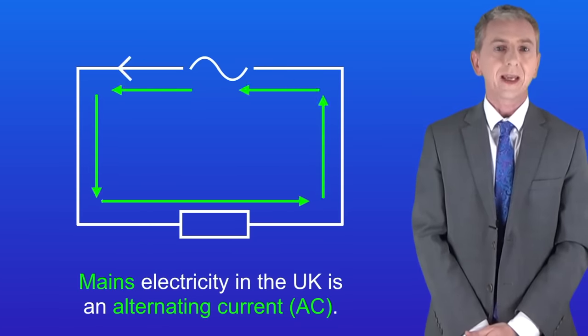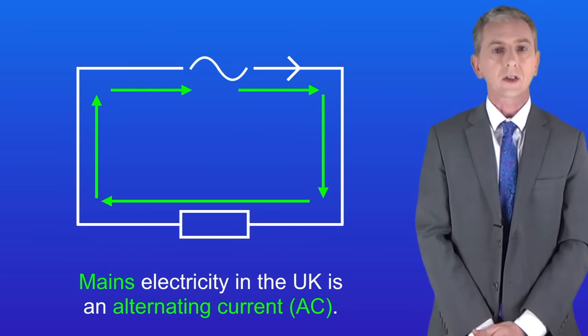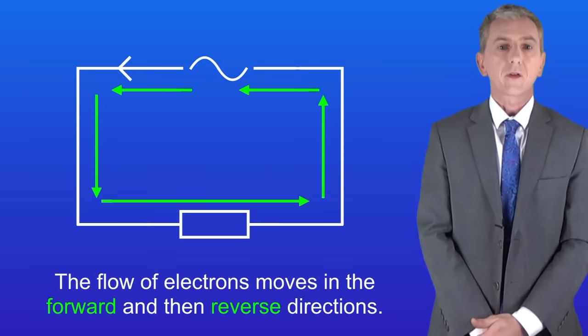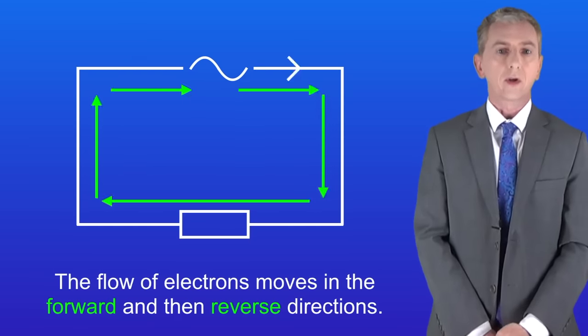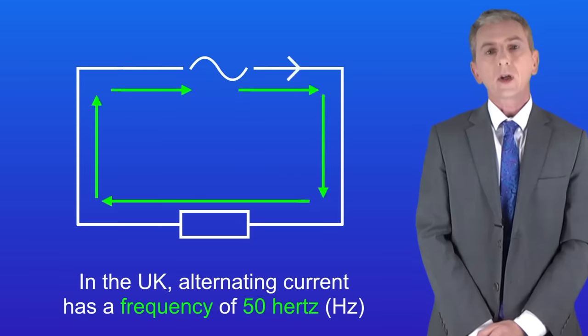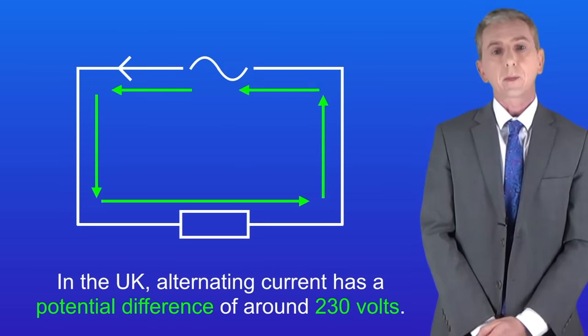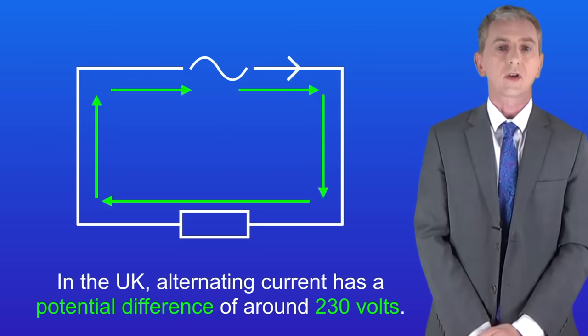In the last video we saw that mains electricity in the UK is an alternating current or AC for short. This means that the flow of electrons moves in the forward and then reverse directions. In the UK alternating current has a frequency of 50 Hertz and the potential difference of around 230 volts.